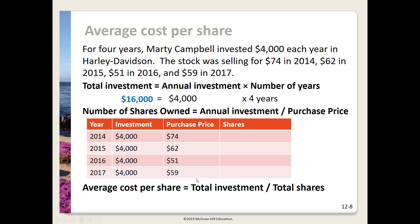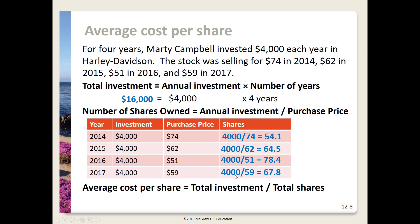Next we figure out how many shares Marty owns. Marty invested $4,000 a year at each year's purchase price. To find the shares purchased each year, we divide: $4,000 divided by $74 gives 54.1 shares in 2014, and we do the same for 2015, 2016, and 2017. Adding all shares together gives a total of 264.8 shares. To determine the average cost per share, we take the total investment of $16,000 and divide it by 264.8 shares, giving approximately $60.42.